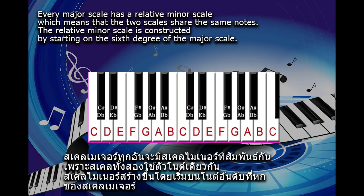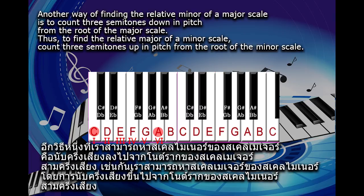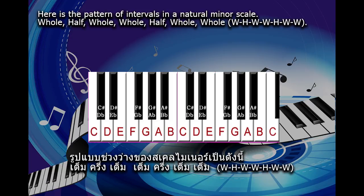Every major scale has a relative minor scale, which means that the two scales share the same notes. The relative minor scale is constructed by starting on the sixth degree of the major scale. Another way of finding the relative minor of a major scale is to count three semitones down in pitch from the root of the major scale. Thus, to find the relative major of a minor scale, count three semitones up in pitch from the root of the minor scale.